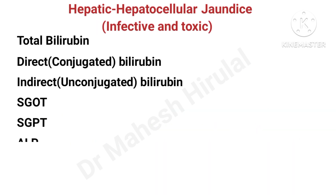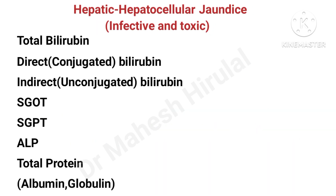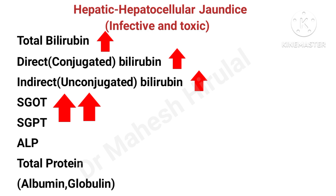In hepatocellular jaundice due to infective and toxic causes, there will be a rise in total bilirubin with an equal rise in direct and indirect bilirubin. SGOT and SGPT will be raised about 10 to 15 times, which indicates hepatocellular damage. Alkaline phosphatase and proteins will be normal in this scenario.